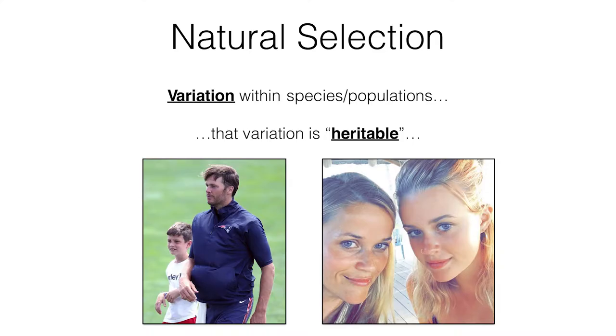Darwin observed variation in the pigeons he saw, as well as a bunch of different organisms, and he wanted to understand this variation within the species — where it comes from, what is responsible for it. For Darwin's idea of natural selection to work, you can't just have variation. That variation has to be what we call heritable.